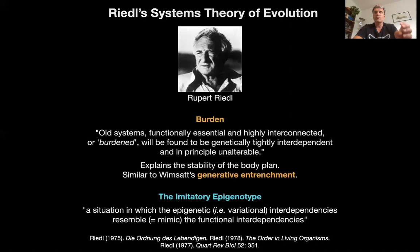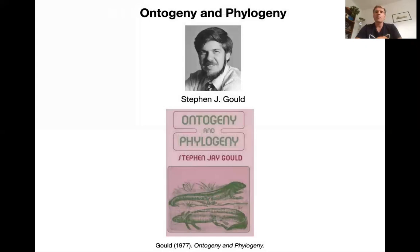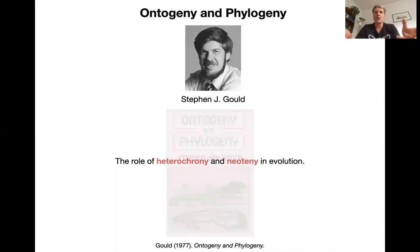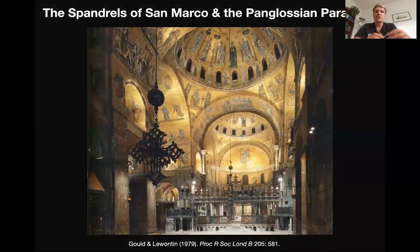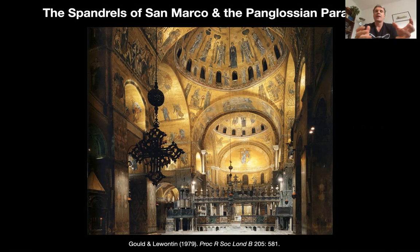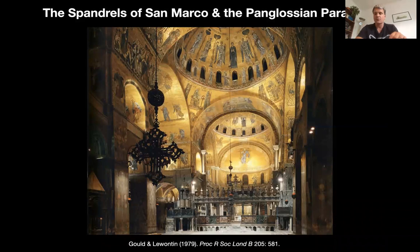My favorite Riedlian concept is the imitatory epigenotype, where he observes that you need alignment of epigenetic interdependencies — the way the system can vary — with the functional interdependencies, the way the system needs to vary to be adapted through natural selection. Riedl claims the architecture of the organism biases variation in a way that makes it easier to evolve. This is a very early treatment of evolvability. In the English-speaking world, Riedl wasn't really noticed. The origins of Evo-Devo lay more with Stephen Jay Gould, especially his 1977 book Ontogeny and Phylogeny, discussing the importance of heterochrony and neoteny — basically the dissociability of different developmental processes and how they structure biased or constrained variation. Two years later, his famous spandrels paper with Lewontin argued against extreme adaptationist views and for the idea that the structure of the organism can impose absolute constraints on evolution.